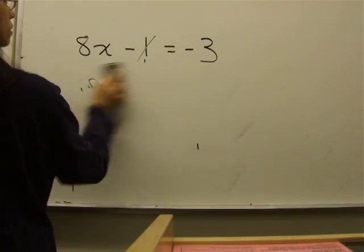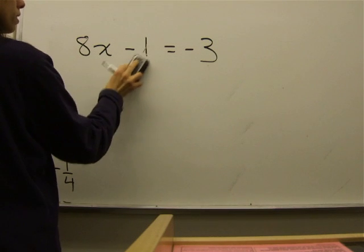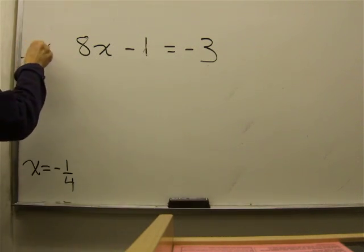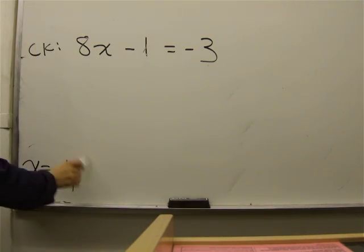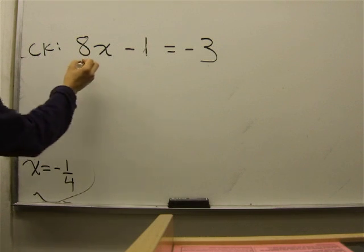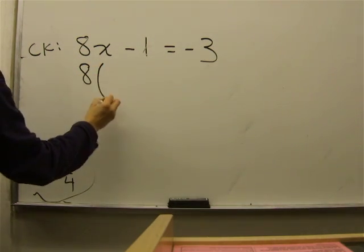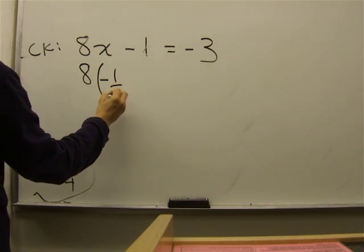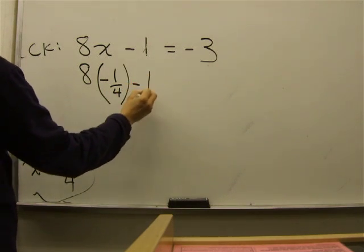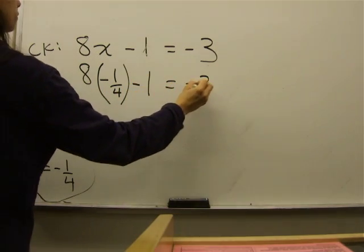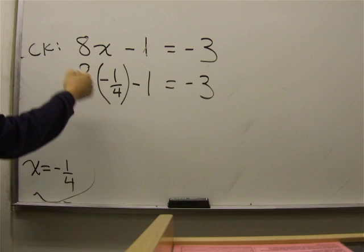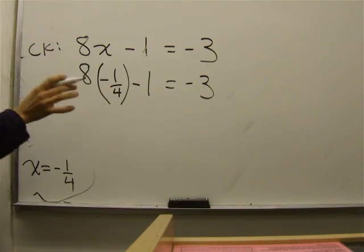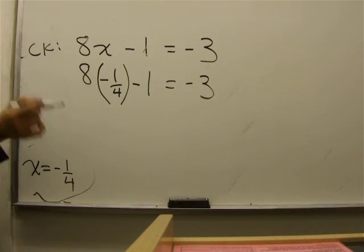You need to check to make sure that that is correct. Let's do the check. Insert your answer where the x is. 8 times negative 1 over 4 minus 1 equals negative 3. You have a fraction here. But first, do not forget your order of operation.